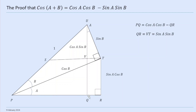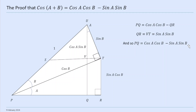QR, which is the short bit here, is the same as VT. We know this hypotenuse is sin(b) and the angle is a, so VT = sin(a)sin(b). So what we've got is PQ = cos(a)cos(b) — the PR piece — minus VT which is QR, which is sin(a)sin(b). That is the proof.